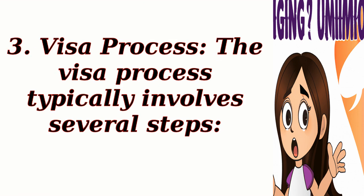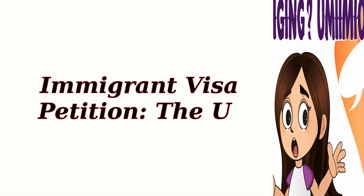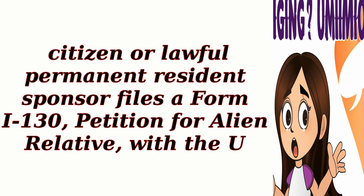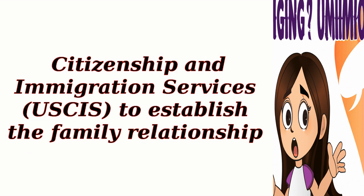The visa process typically involves several steps. First, the Immigrant Visa Petition: the U.S. citizen or lawful permanent resident sponsor files a Form I-130, Petition for Alien Relative, with U.S. Citizenship and Immigration Services, USCIS, to establish the family relationship.